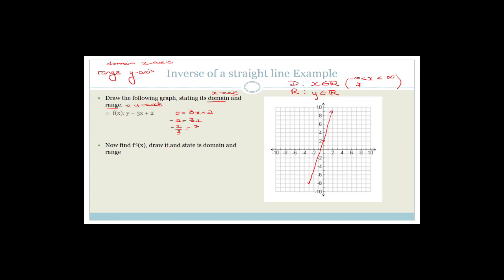Now it says find the inverse of x, draw it, and state the domain and range. So how do you find the inverse? We swap x and y and solve for y. So we go: x equals 3y plus 2. Then x minus 2 equals 3y. So we divide both sides by 3, giving us x minus 2 over 3 equals y. We can rewrite this as x over 3 minus 2 over 3 equals y. So the y-intercept is minus 2 over 3.